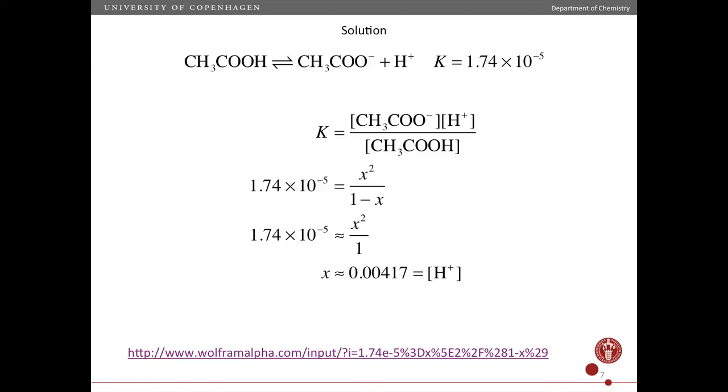So you set up this equation and solve. Now, in this particular case, you can solve this approximately by saying, well, we know K is very small, so x will be very small. And so we can say 1 minus x is approximately just 1. And then we get this answer here.